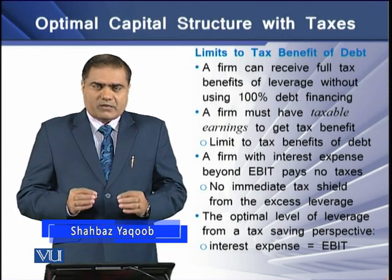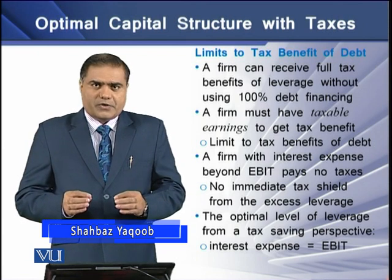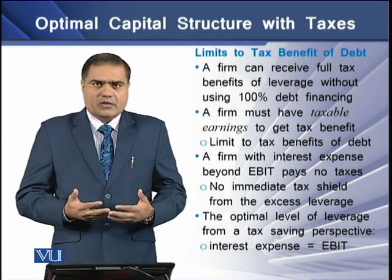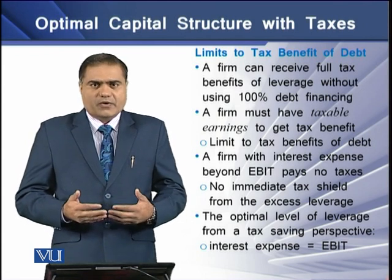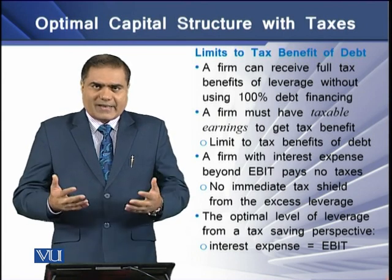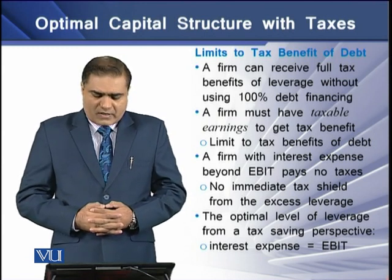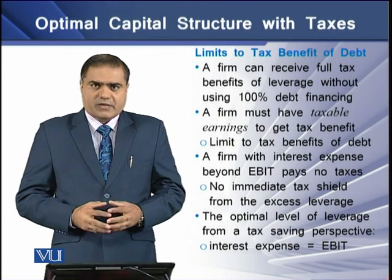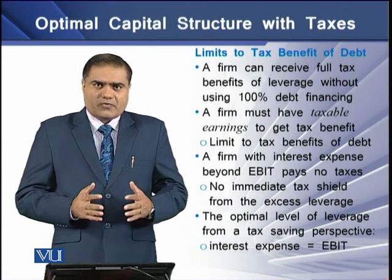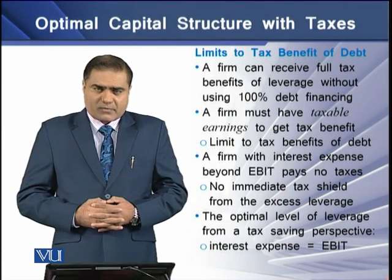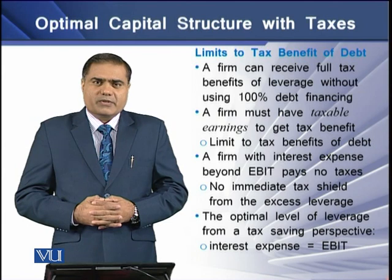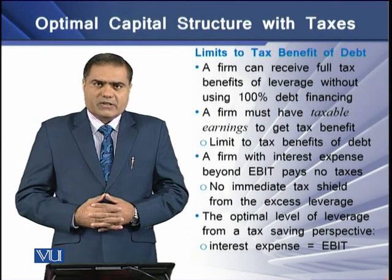This means there is a limit of using debt in order to have a tax shield, and that limitation is the taxable earnings — the profitable earnings — which means that earnings before interest and tax (EBIT) of a particular firm should be positive in order to achieve tax savings. A firm with interest payments beyond EBIT pays no taxes because there is no taxable profit, so no immediate tax shield can result from excessive leverage. The optimal level of leverage from a tax-saving perspective is the point where the interest payments of a firm are equal to its EBIT.